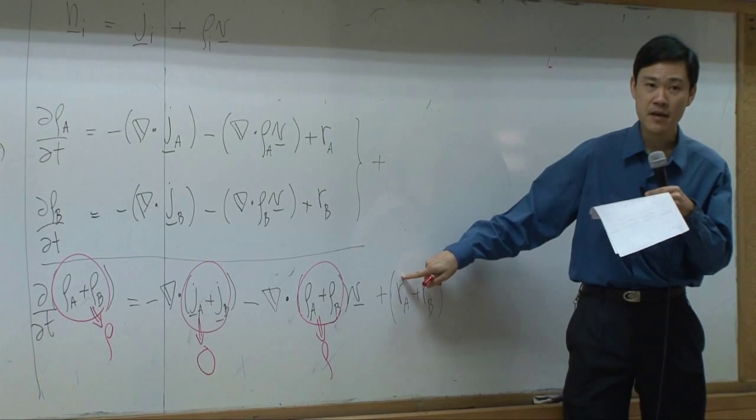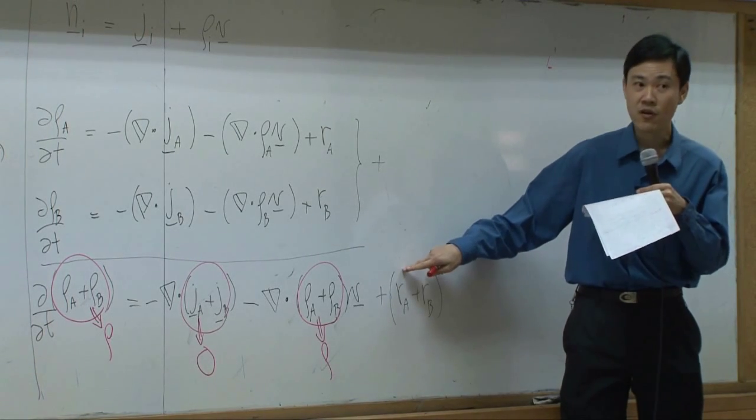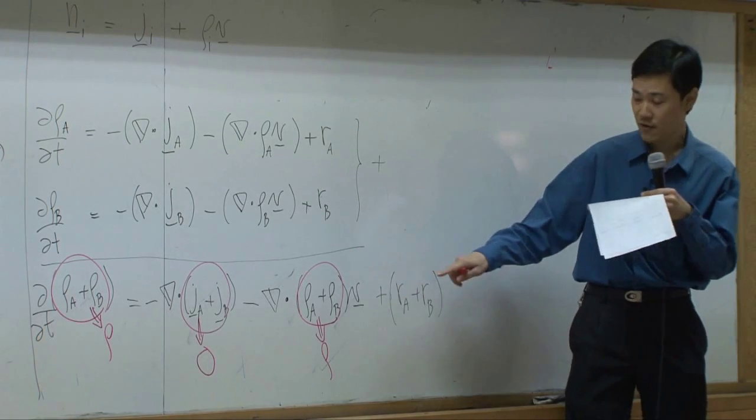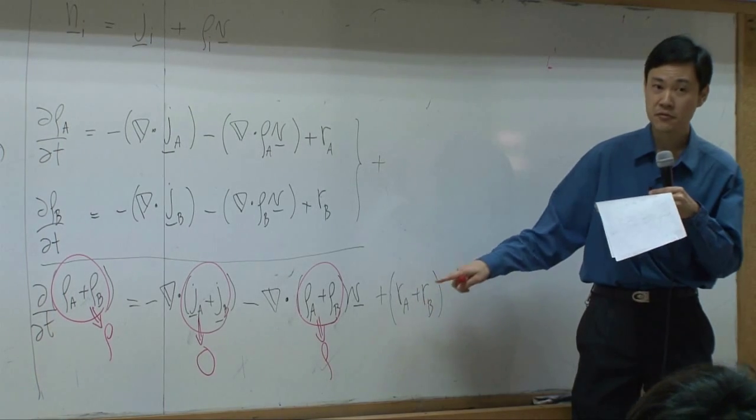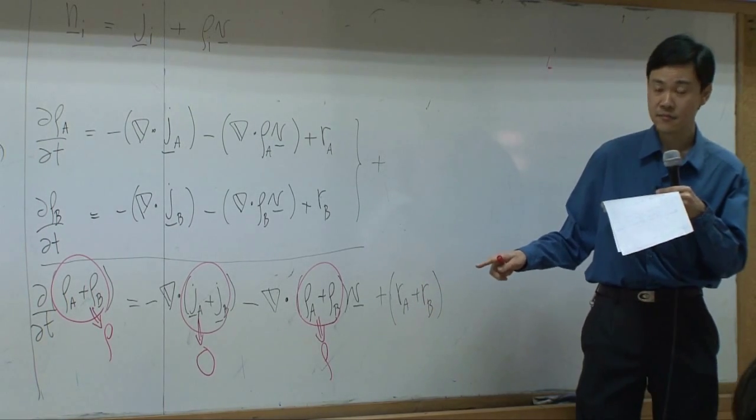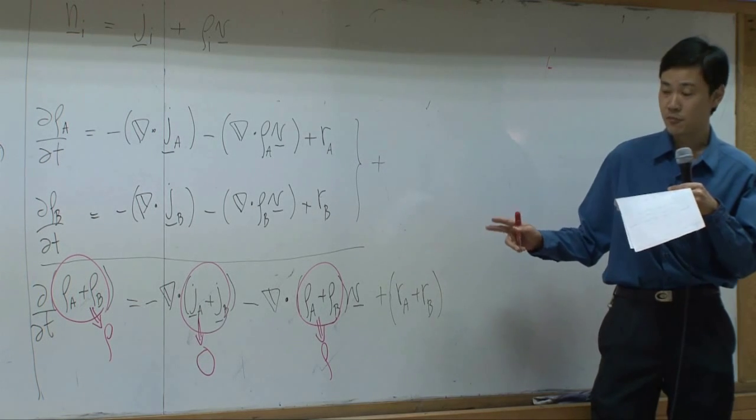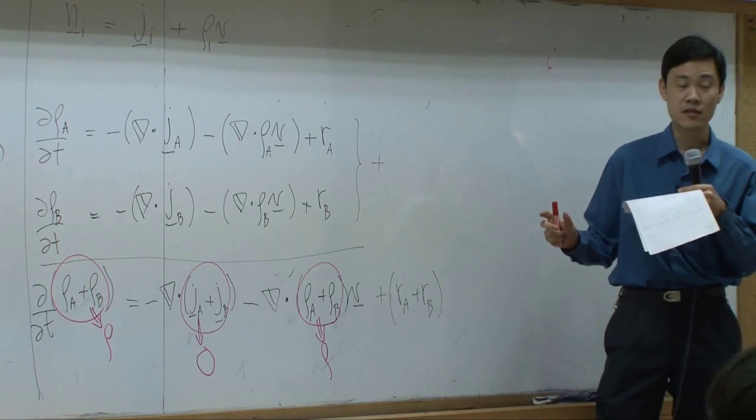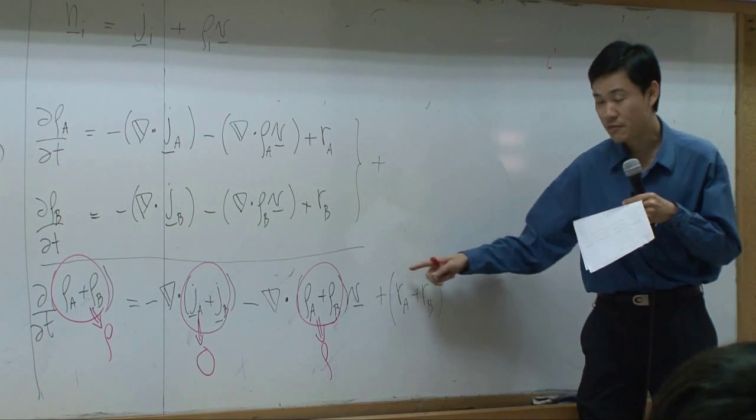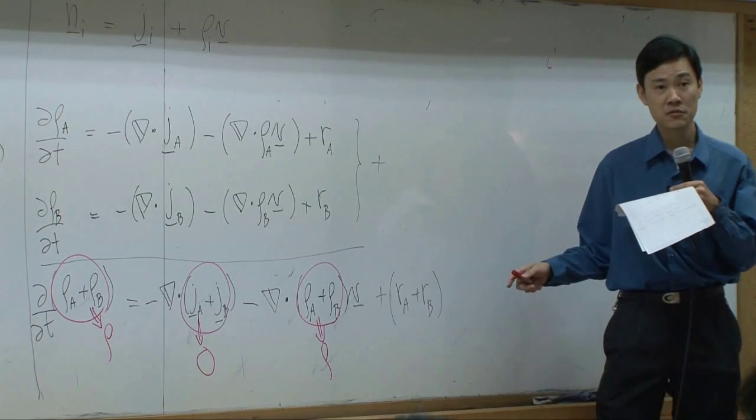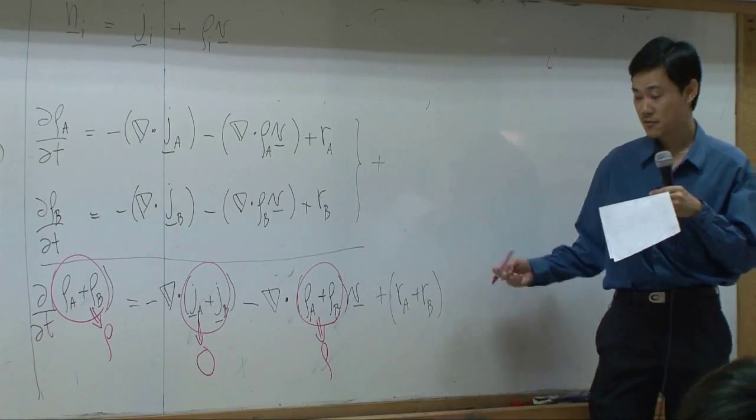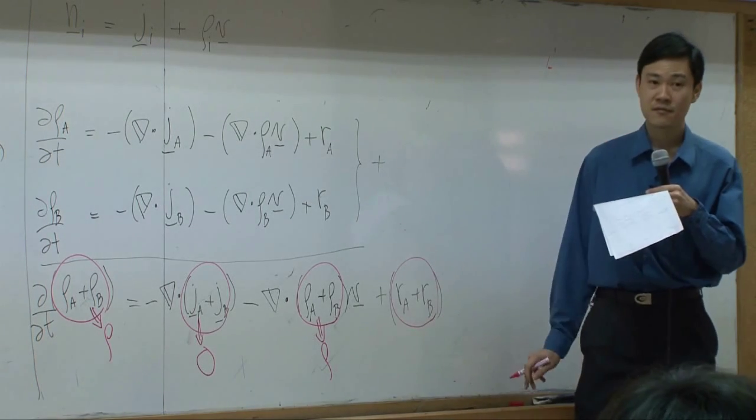RA itself means how much or how many kilograms of A is produced per unit time. RB would be how many kilograms of B is produced per unit time as well within the same unit time. So these two combined should equal to, think about that...